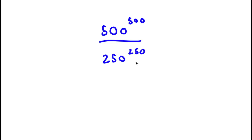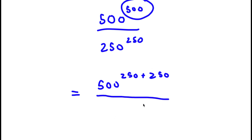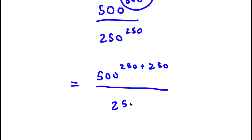What I'm first going to do is rewrite the exponent 500 as 250 plus 250. So now I have 500 to the power of 250 plus 250, over 250 to the power of 250.